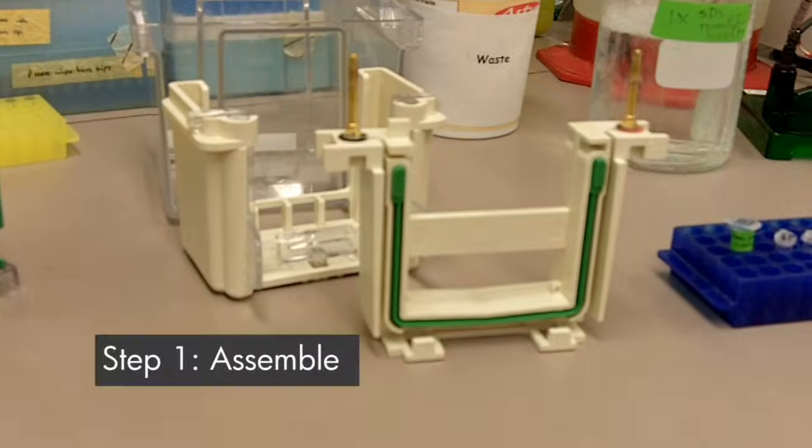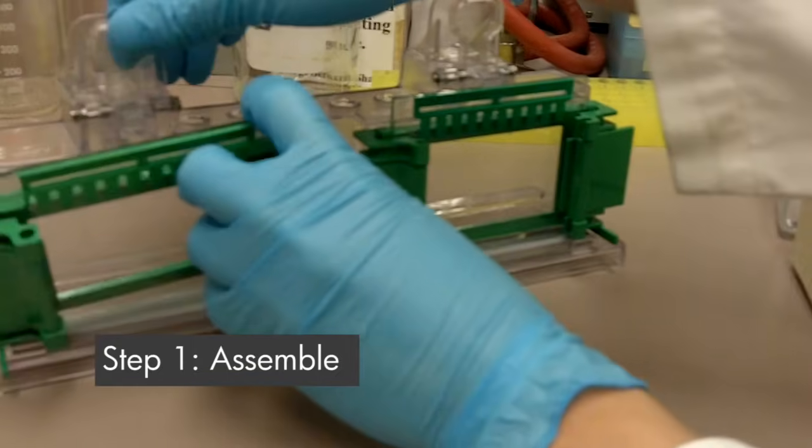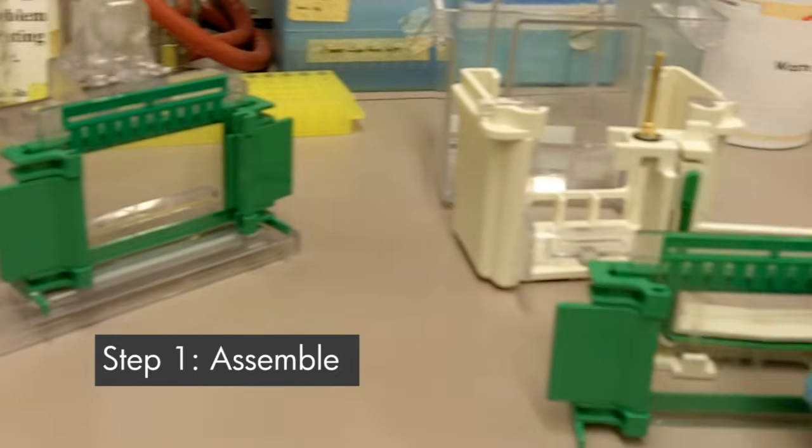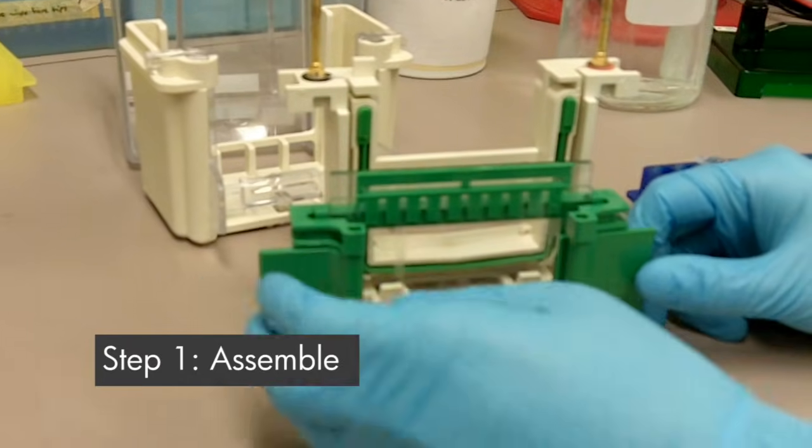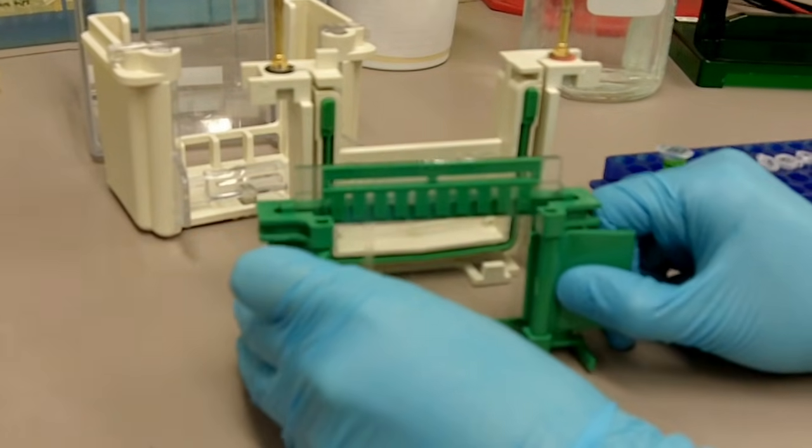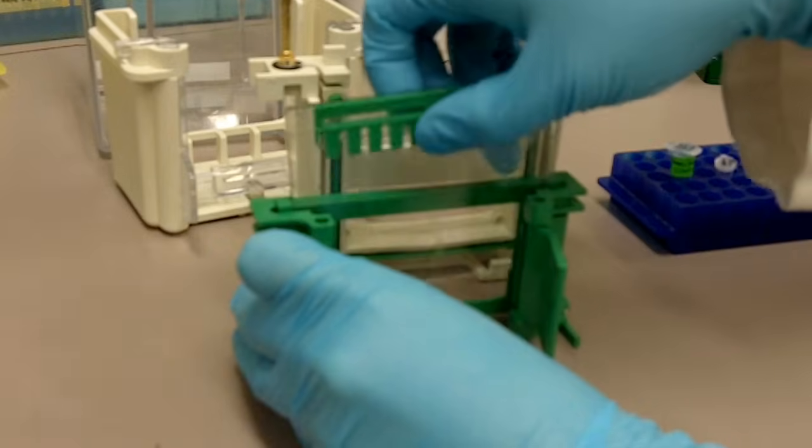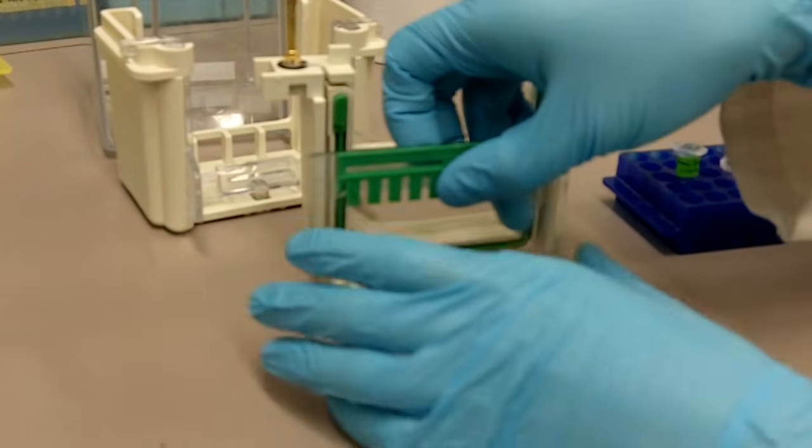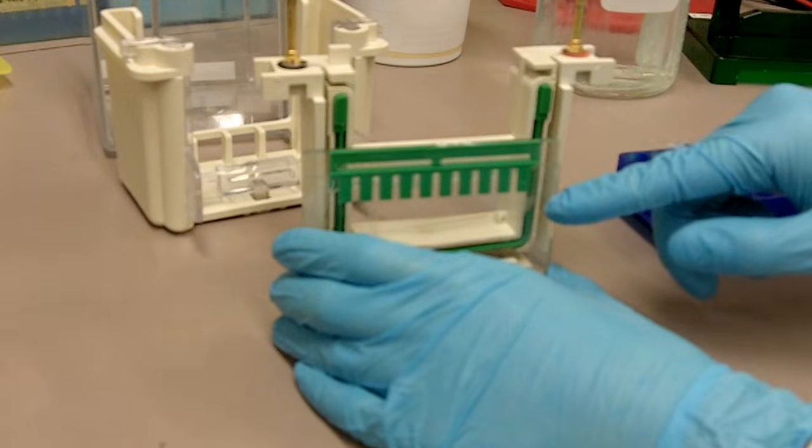To assemble the gel, first of all, we'll take the plate from the gel casting apparatus. We'll take out the plate like that, and remember there's a tall plate and a short plate.